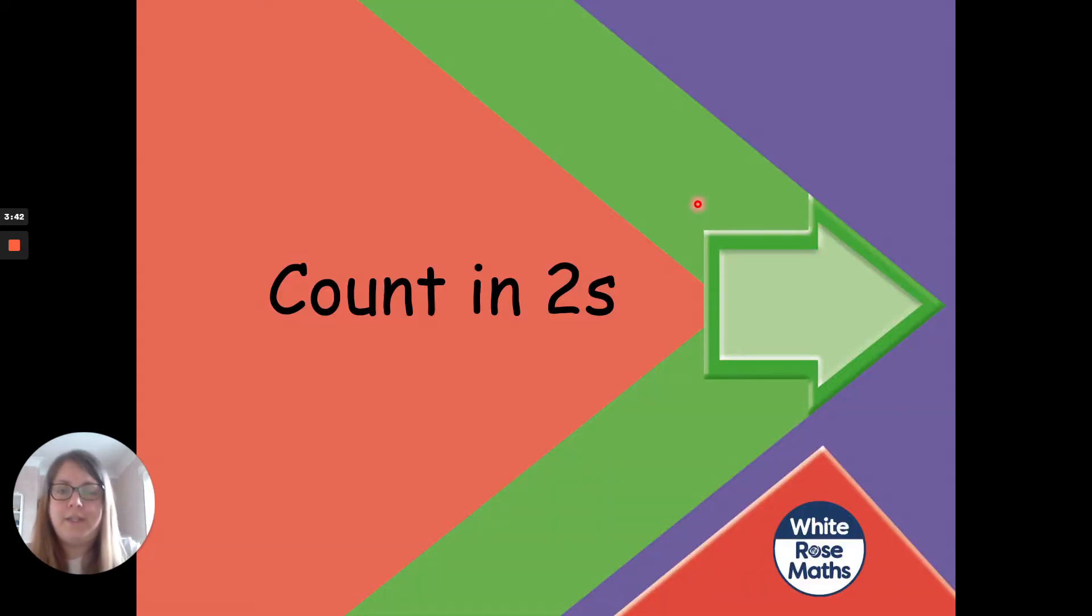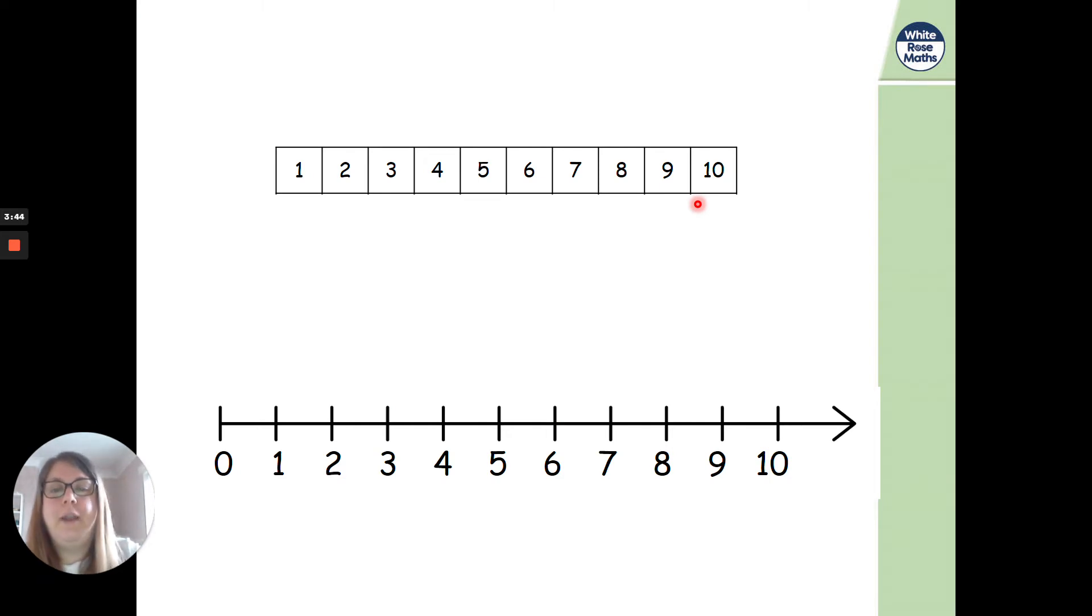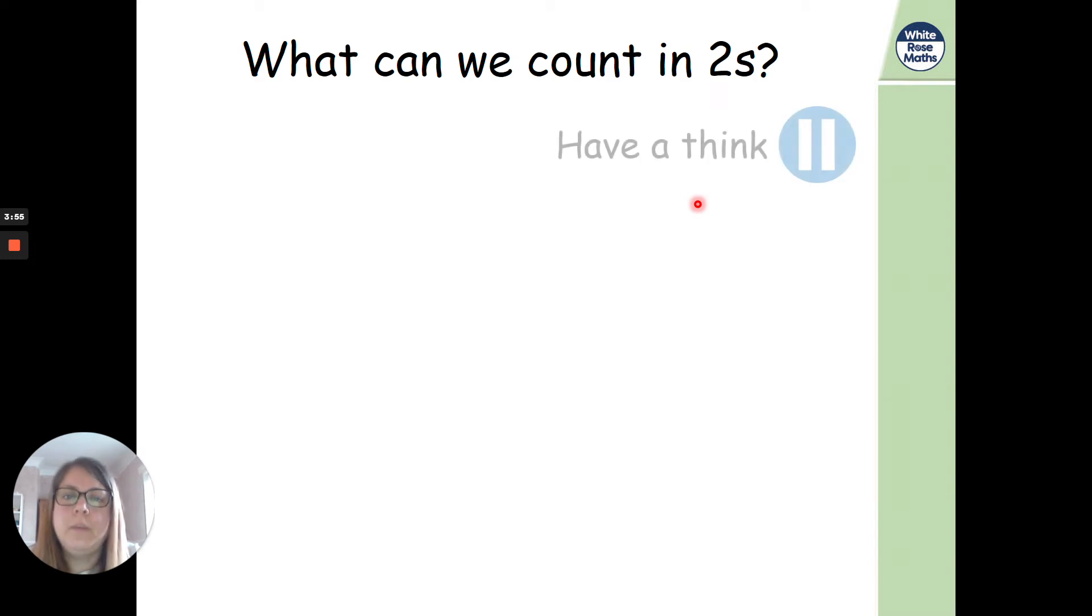Right, counting in twos this time. So here we have our number lines. Are we ready? 2, 4, 6, 8, 10. We're just going to start off quite simple first of all and then we'll build up a little bit trickier later. So what can we count in twos?